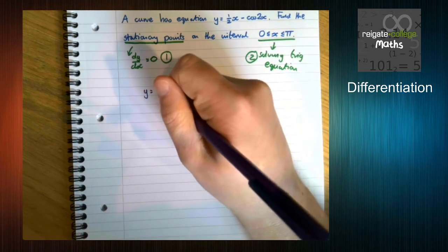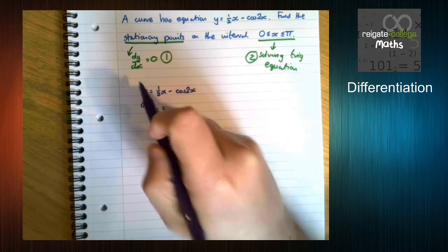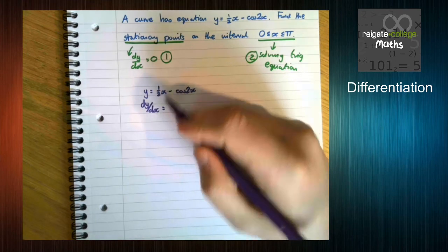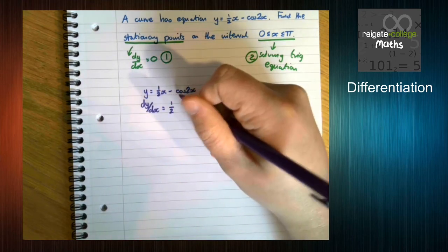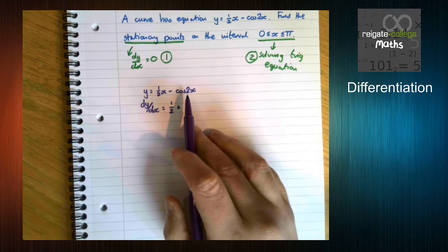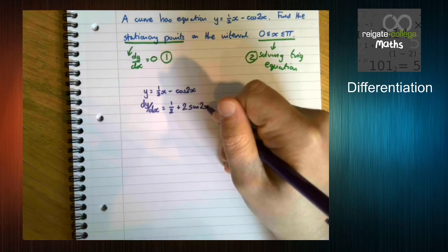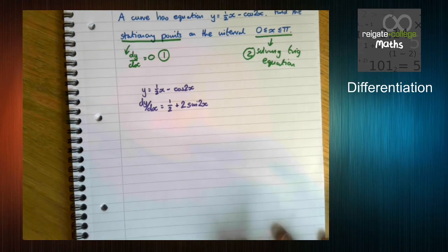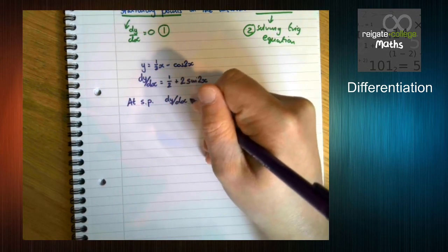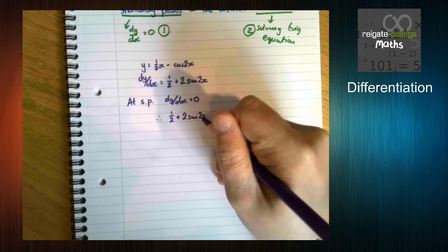With y equals a half x minus cos 2x, we differentiate: a half x differentiates normally to a half. For minus cos 2x, cos goes to minus sine, the minus on the front changes it to a plus, and the 2 inside comes to the front, giving plus 2 sine 2x. Setting dy by dx equal to zero, we get a half plus 2 sine 2x equals zero.